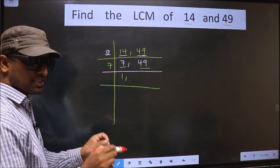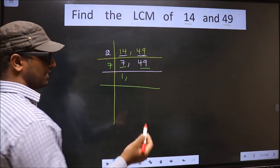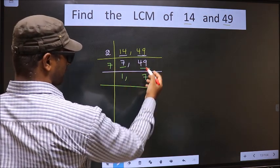Always remember 7 squared is 49. 7 into 7 is 49. So 7 times 7 is 49.